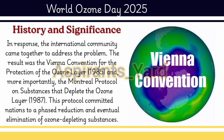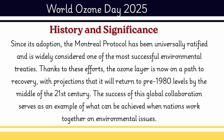In response to the formation of the ozone holes, the international community came together to address the problem. The result was the Vienna Convention for the Protection of the Ozone Layer, formed in the year 1985, and more importantly, the Montreal Protocol on the Substances that Deplete the Ozone Layer, established in 1987. This protocol committed nations to a phased reduction and eventual elimination of ozone-depleting substances. Since its adoption, the Montreal Protocol has been universally ratified and is widely considered one of the most successful environmental treaties. Thanks to these efforts, the ozone layer is now on the path to recovery, with projections that it will return to pre-1980s levels by the middle of the 21st century.